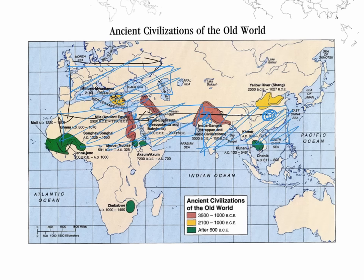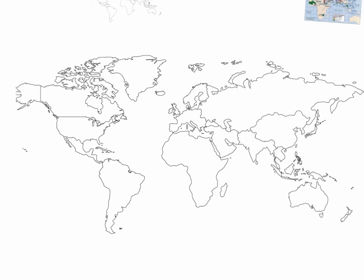Now you can see the advantage Eurasia has. For that, I will bring in another map. Eurasia has a great spread in the east-west direction. Thus, the wheat crop that originated in the Levant could be easily moved to Britain as easily as it could be moved to India or China.